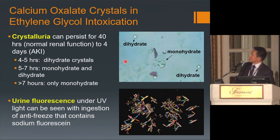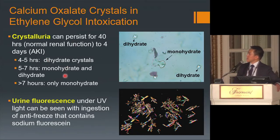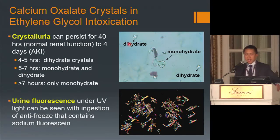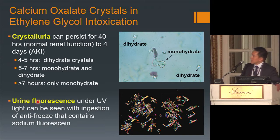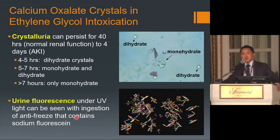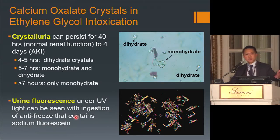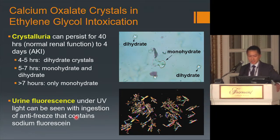Calcium oxalate crystals in the urine can persist for up to four days after ingestion. Initially, within a few hours, envelope-shaped dihydrate crystals appear. After 5–7 hours, a mixture of dihydrate and needle- or dumbbell-shaped monohydrate crystals is seen; after seven hours, only monohydrate crystals are present. Urine fluorescence using a Wood's lamp is a poorly sensitive and specific test — some antifreeze brands contain sodium fluorescein, but not all do, and other factors (foods, medications, urine pH) can also cause fluorescence.